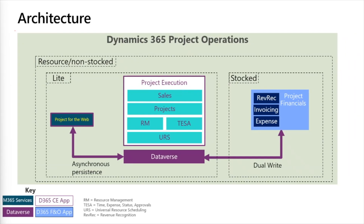You're probably familiar with the diagram showing the three deployment types and the components that are part of each one. The lite version of Project Operations uses Dataverse only and wraps up the Project for the Web engine for scheduling management. The stock-based scenario targets project management and accounting only and is available as a module in the finance and operations app. The resource non-stock-based scenario is cross-platform, with both Dataverse and finance and operations communicating through dual-write.